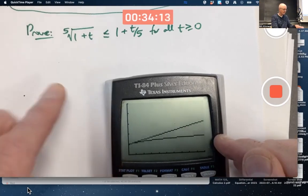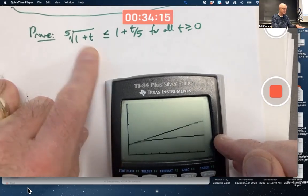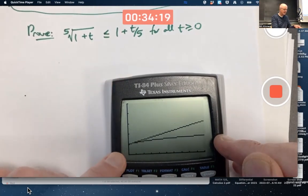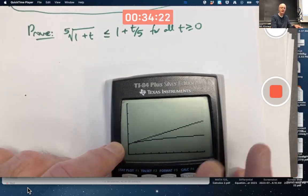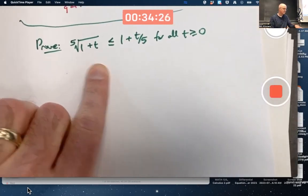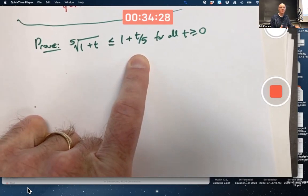Though it does look like they may be equal when t is zero, and in fact yes they are. If you plug in t equals zero here you get fifth root of one, which is one. Plug in t equals zero here, you get one plus zero, which is one.